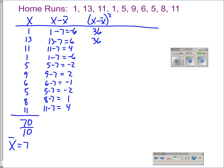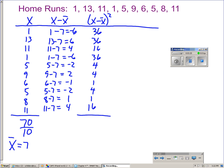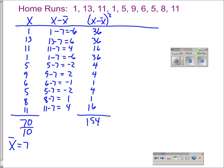This ensures that they all become positive. Once we have squared all the deviations, we will add them up. We get a total of 154 for all our squared deviations.